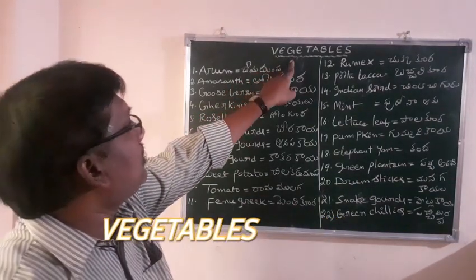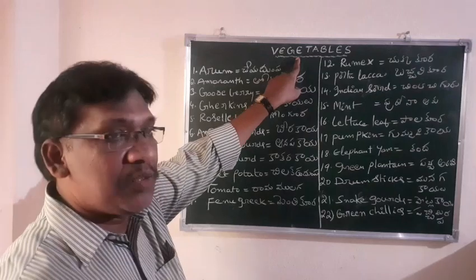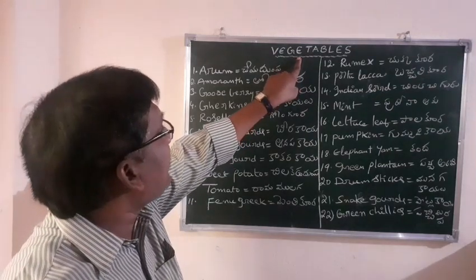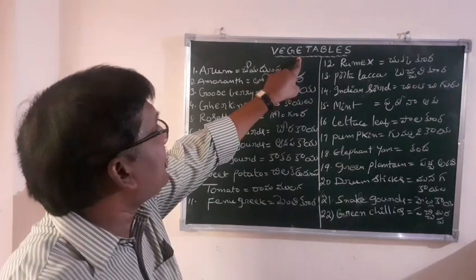In the word 'vegetable' — vegetables — the letter E is silent.